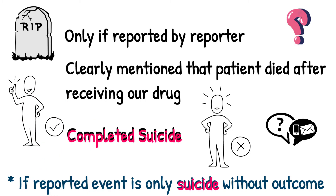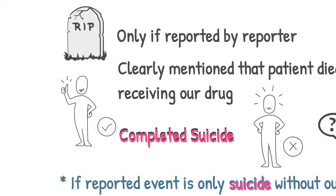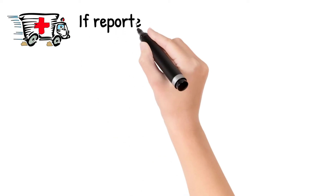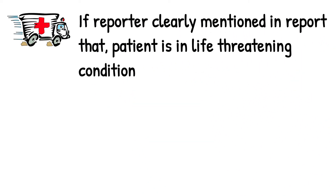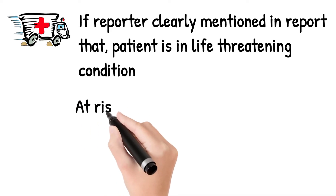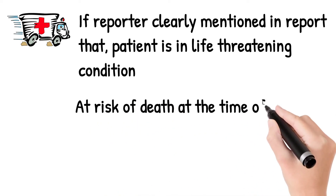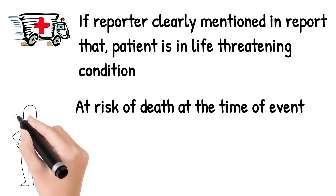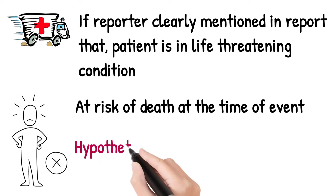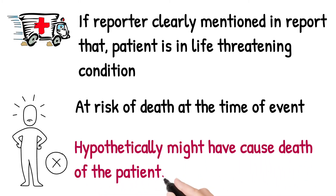Now let's move to the second seriousness criteria, which is life-threatening. The first criteria to consider seriousness of any event as life-threatening is if the reporter clearly mentioned in the report that the patient is in a life-threatening condition at the time of the event. The second criteria is if the patient was at risk of death at the time of the event. The life-threatening criteria does not qualify for events which hypothetically might have caused death if more severe.